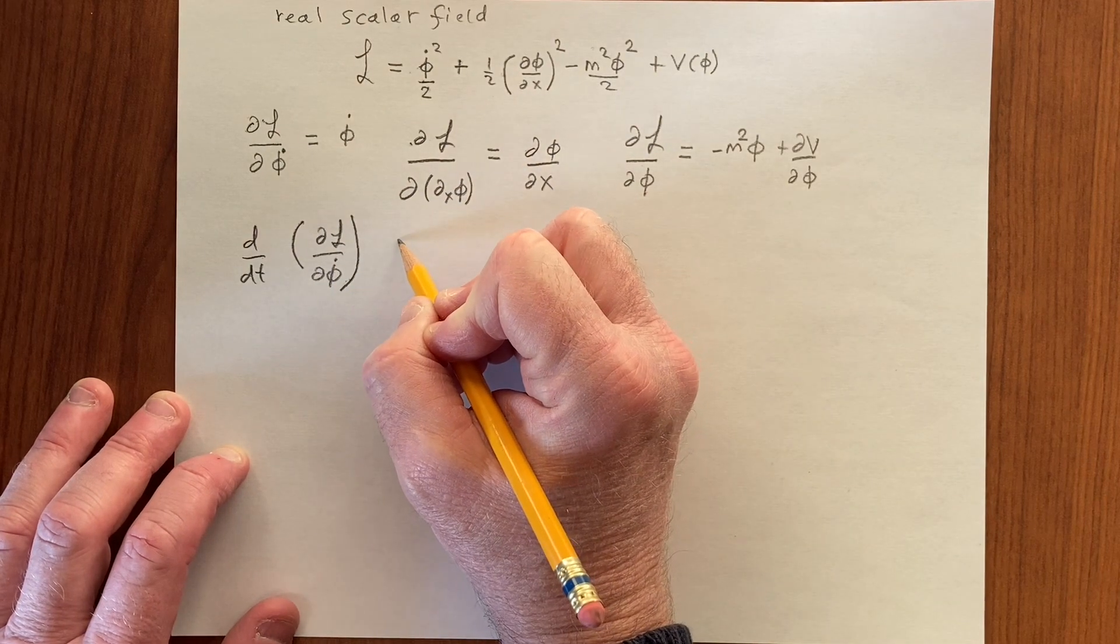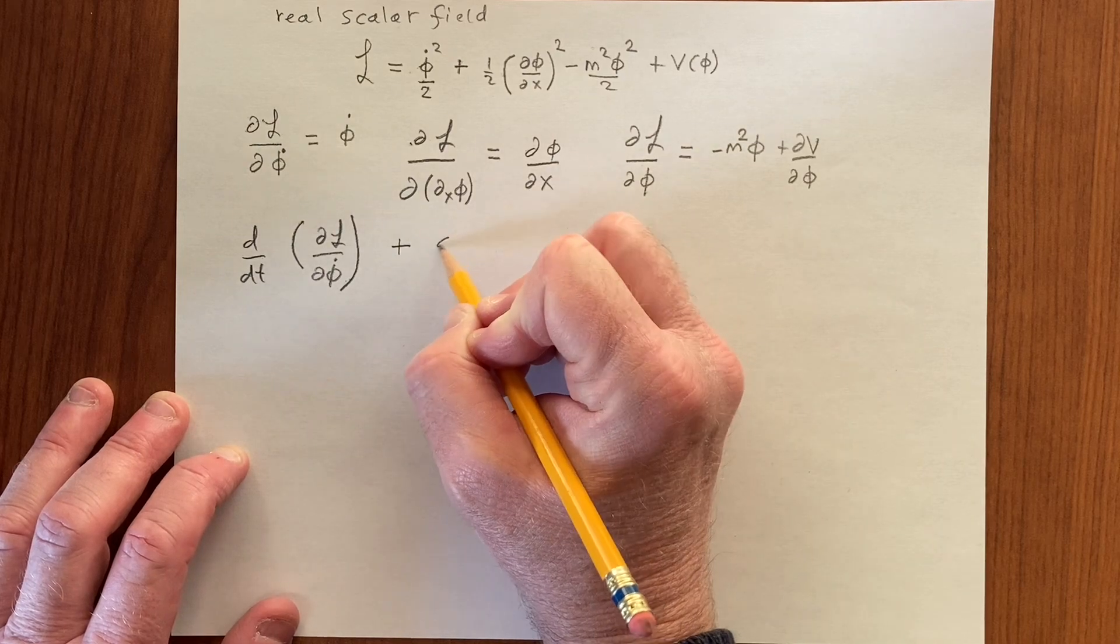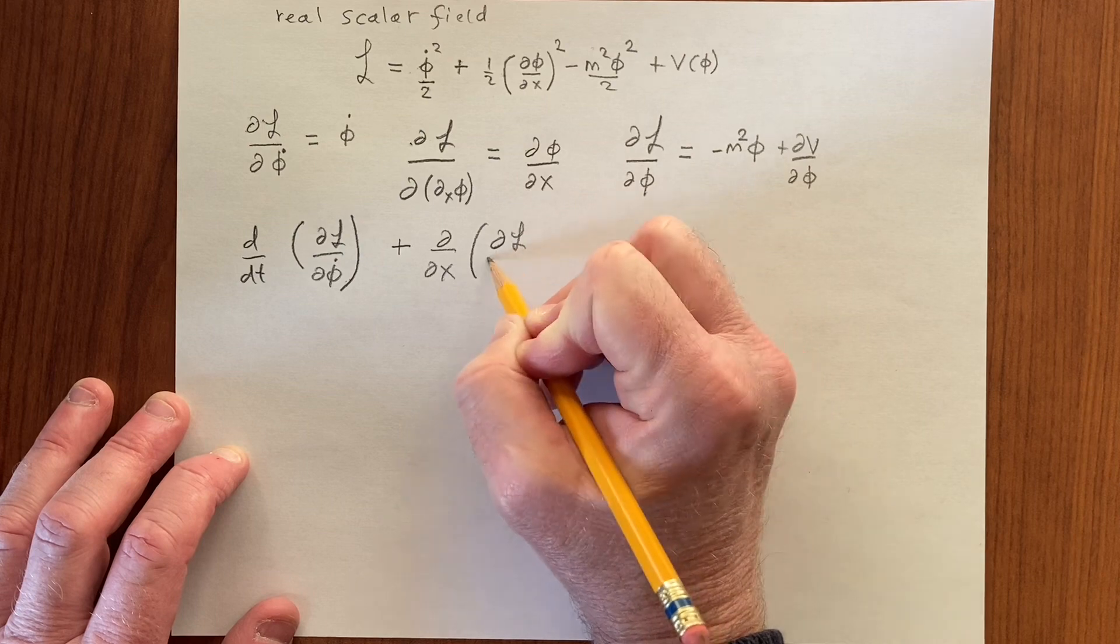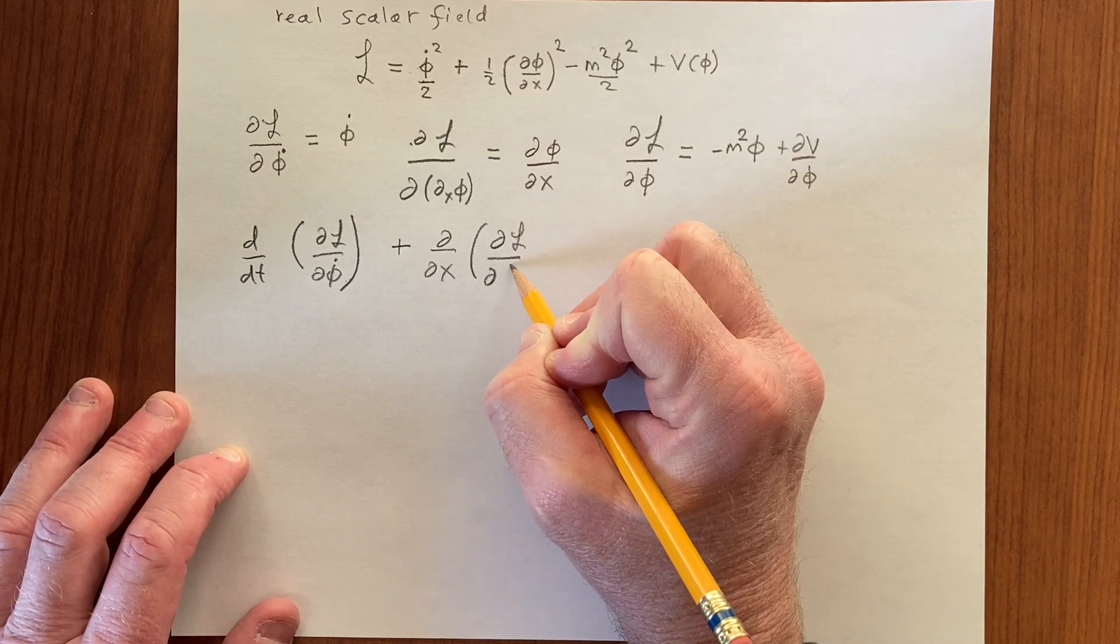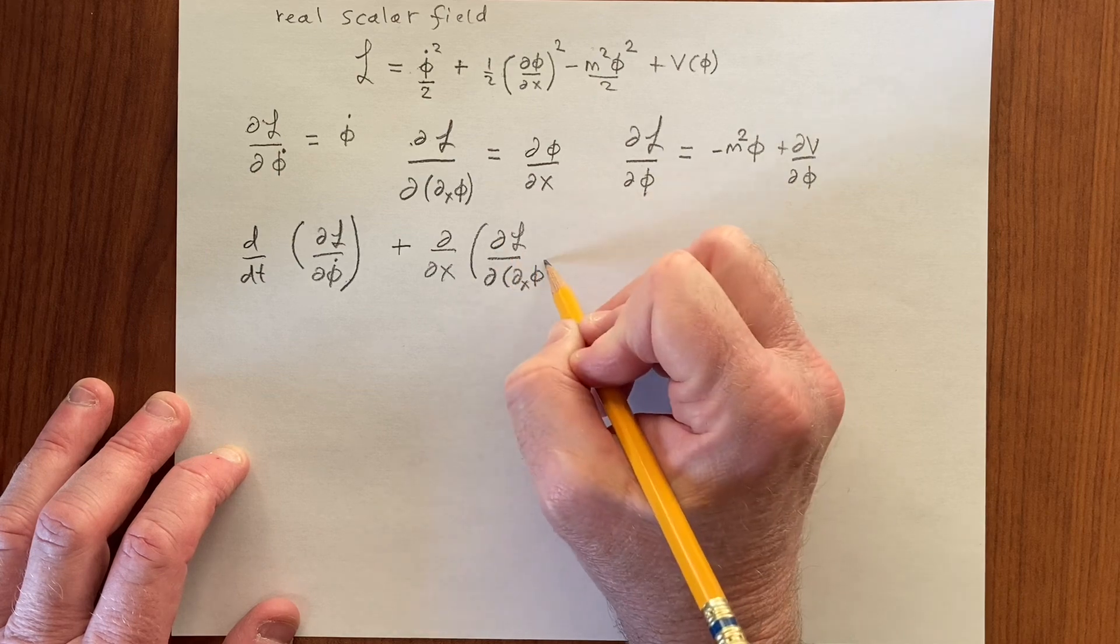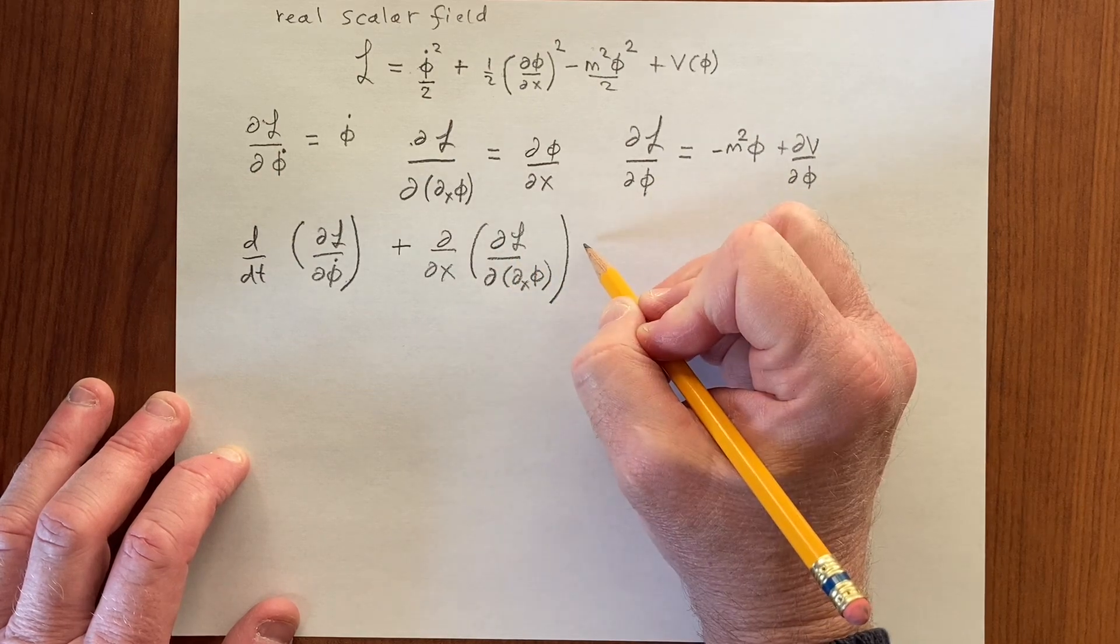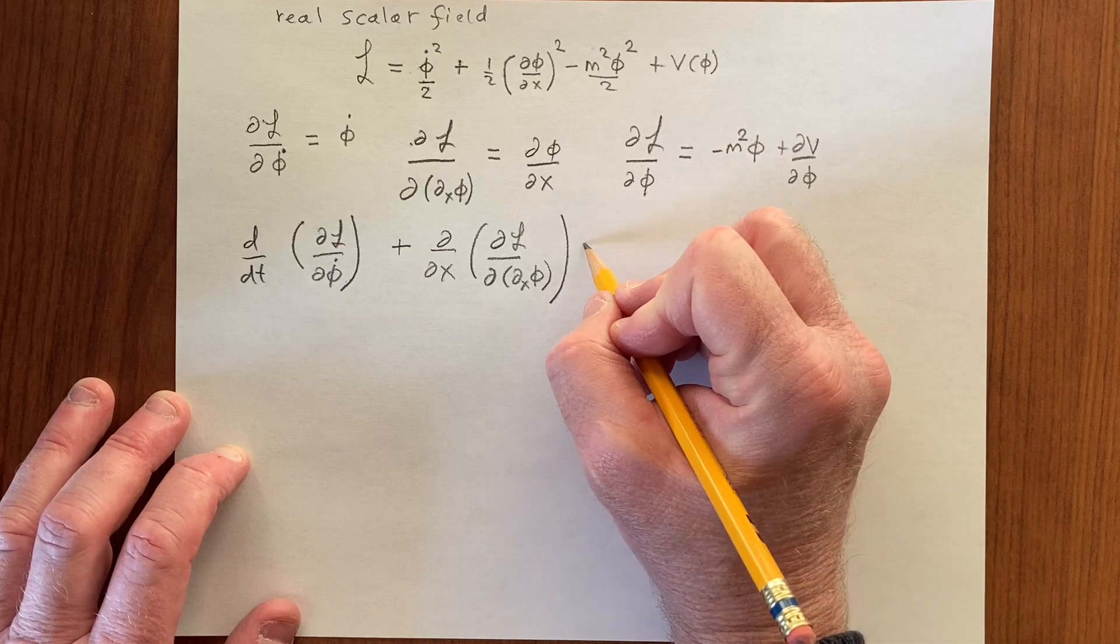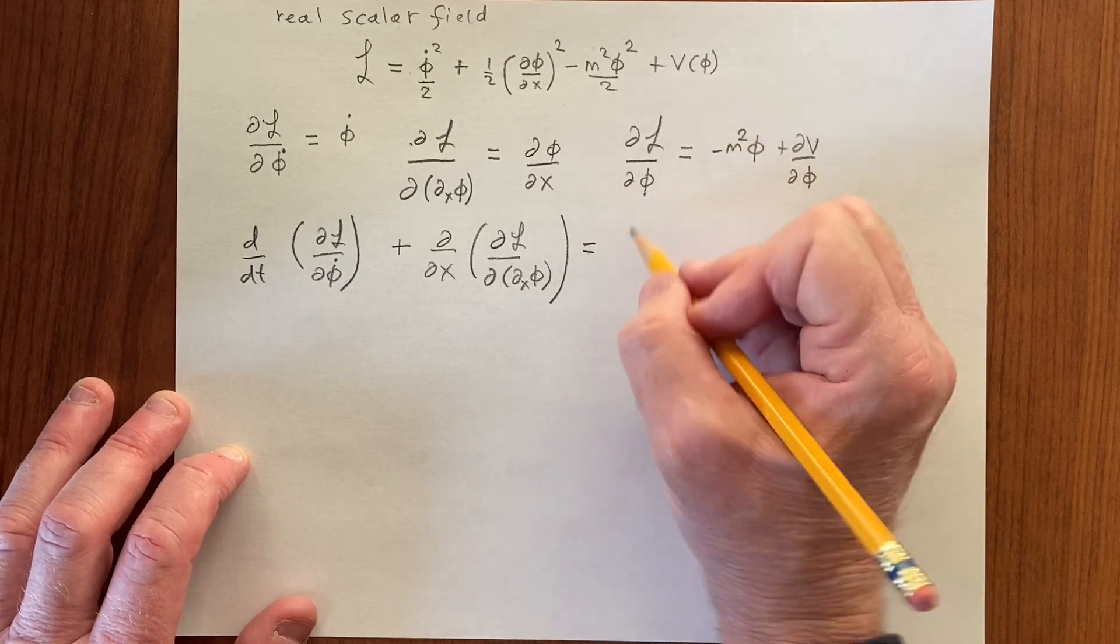Plus d by dx of dl by d phi by dx, and this is equal to dl by d phi.